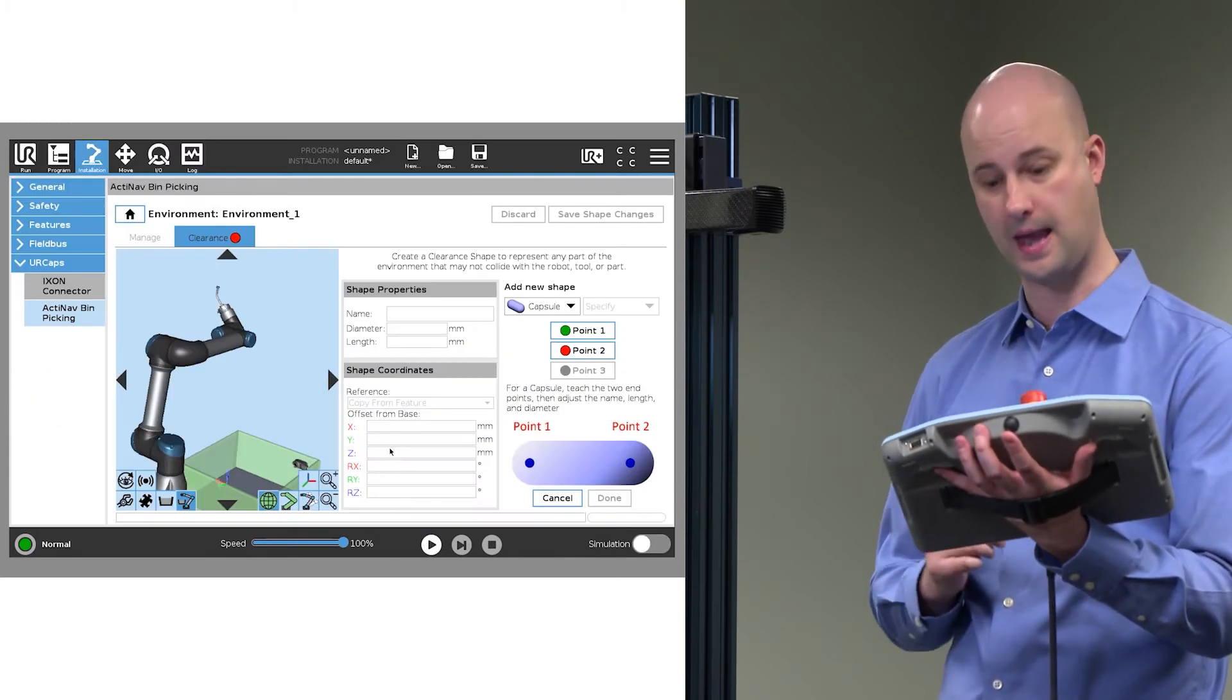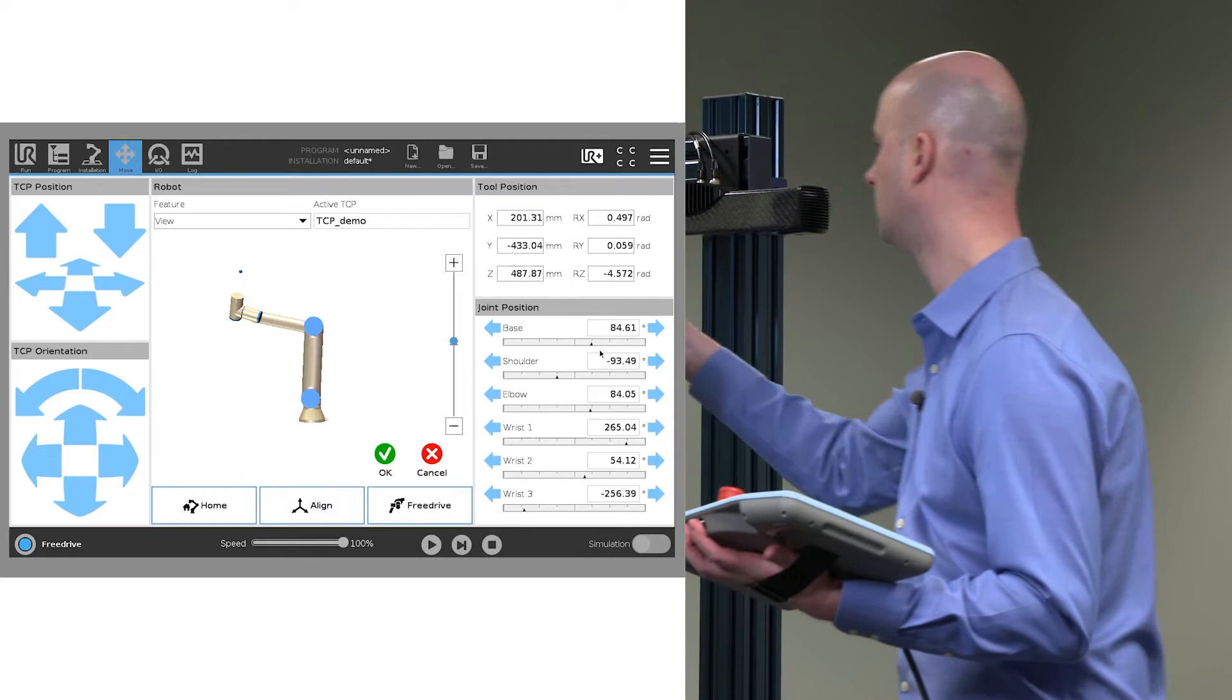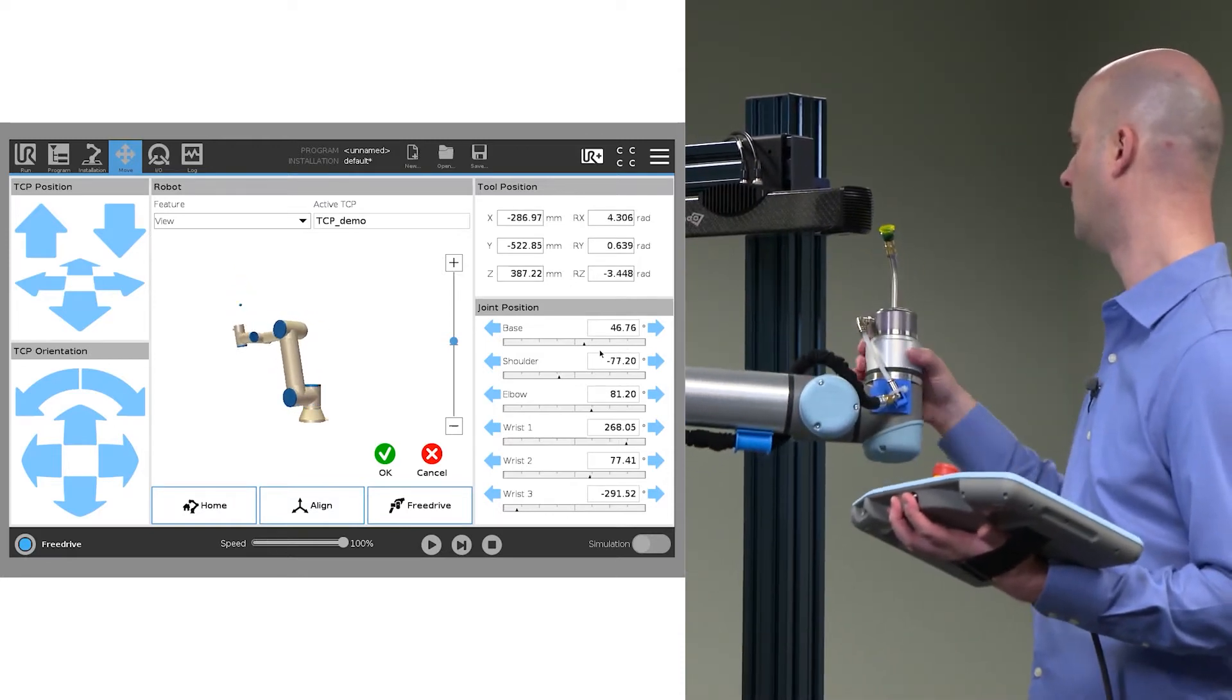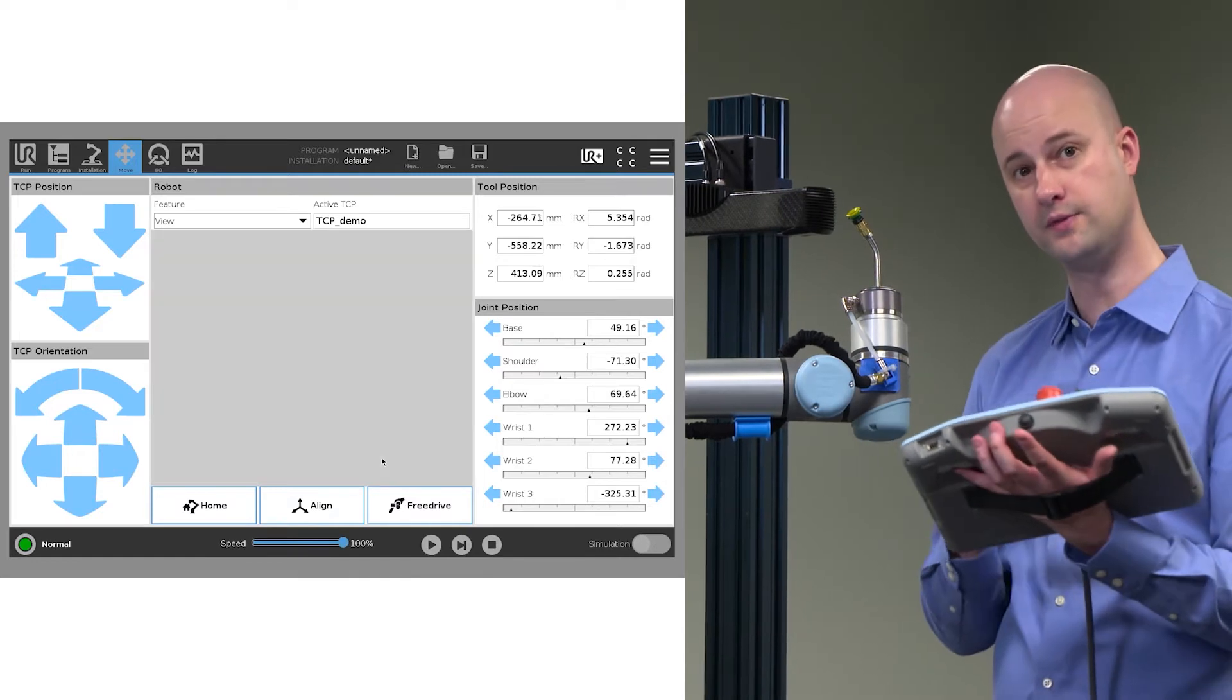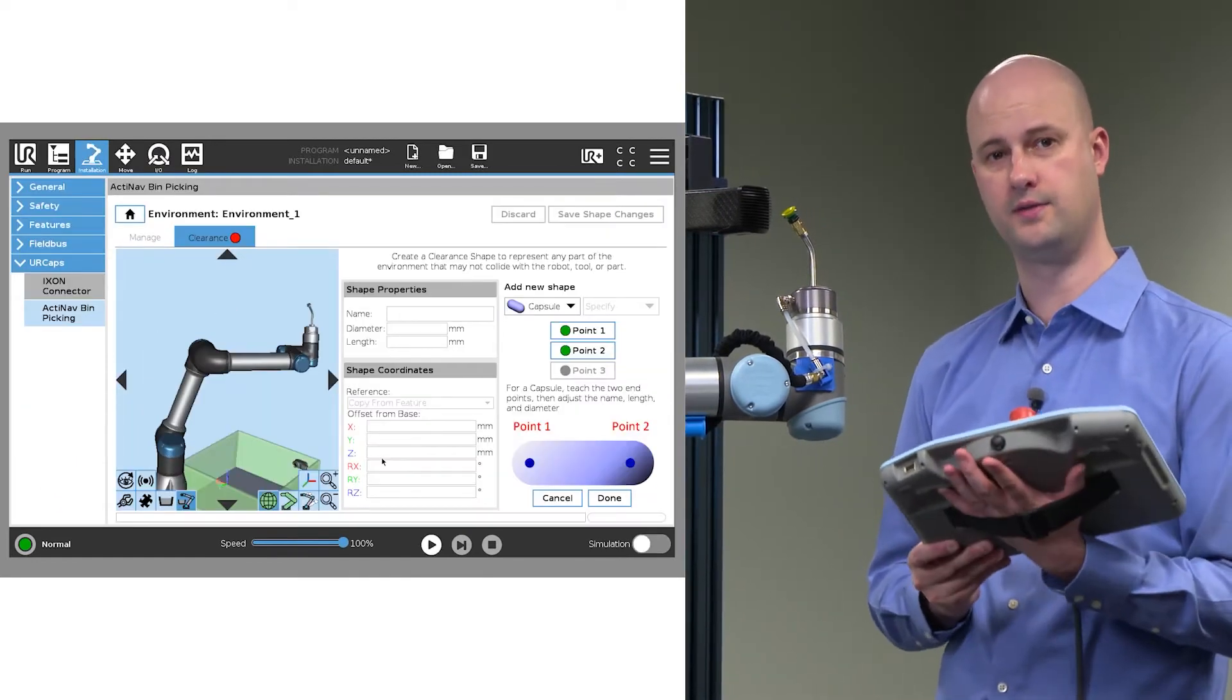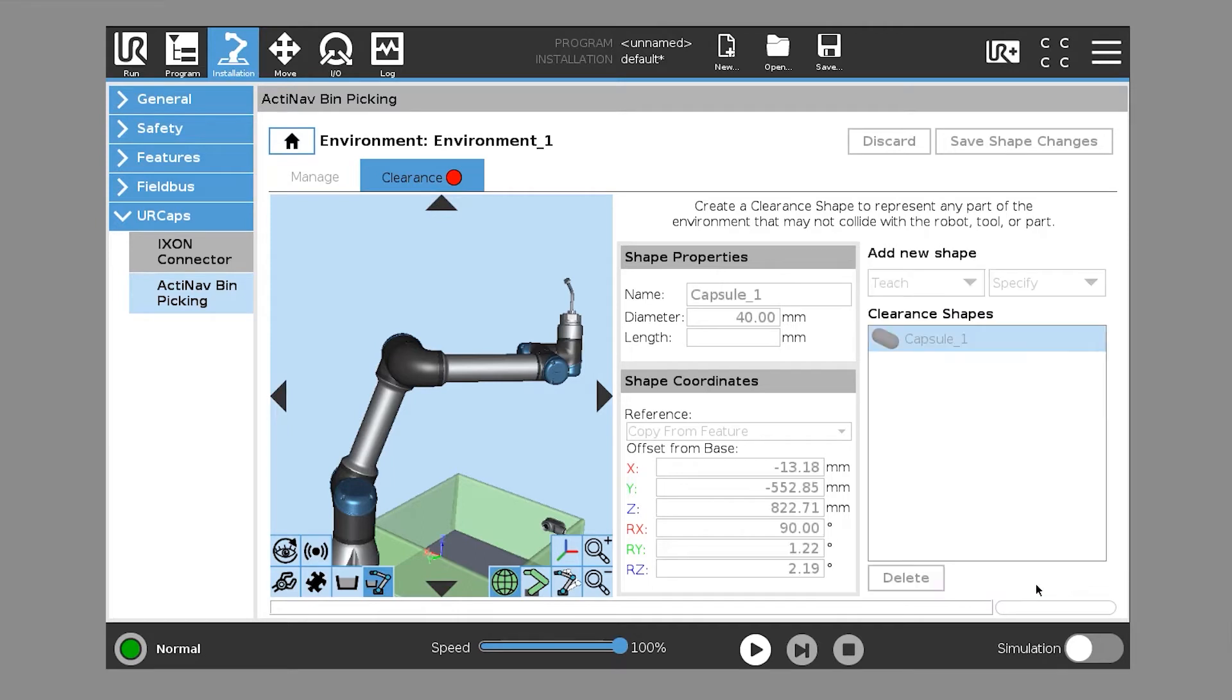So on the left side of the capsule, and we'll go ahead and train point two on the right side. We're referencing the TCP of the end effector. Now that we've trained these two points, we hit done. And we can see a capsule's been created in the environment. We then want to give it a diameter.